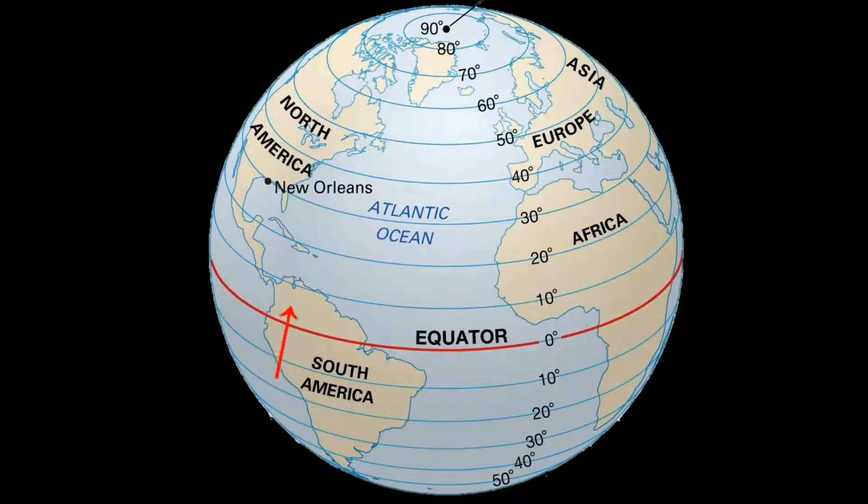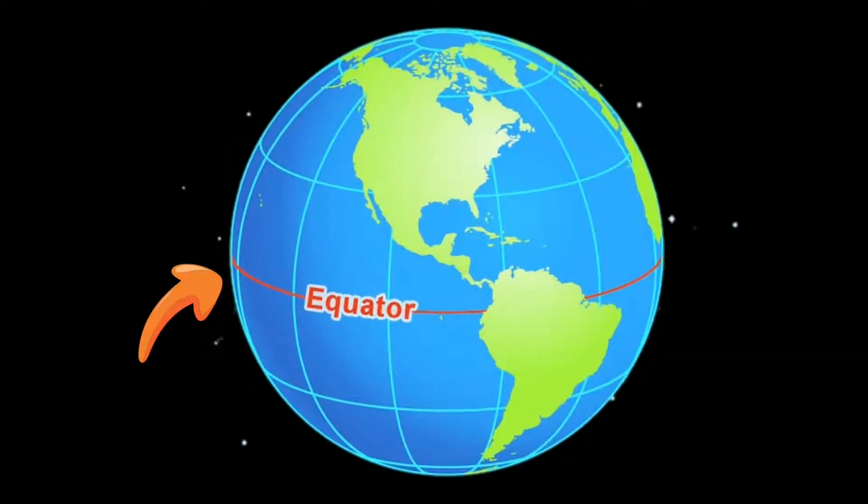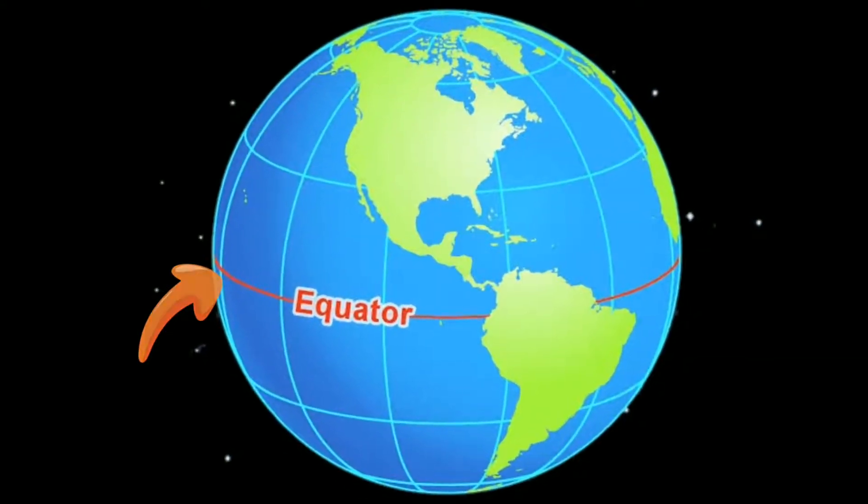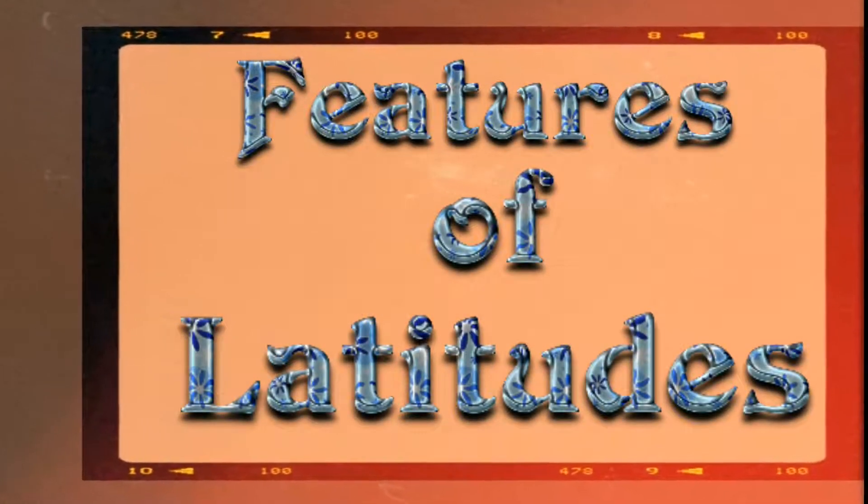The equator is the longest and most important line of latitude. It runs in the middle of the globe. Now, features of lines of latitude.